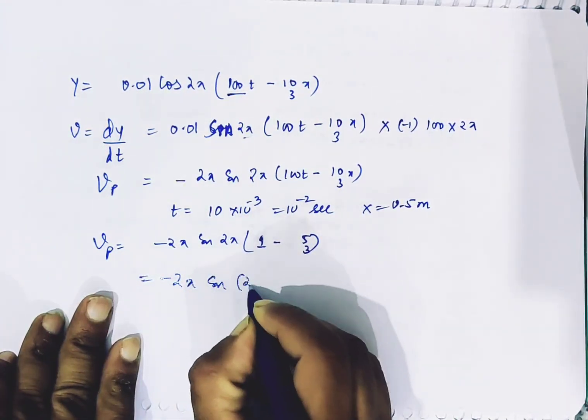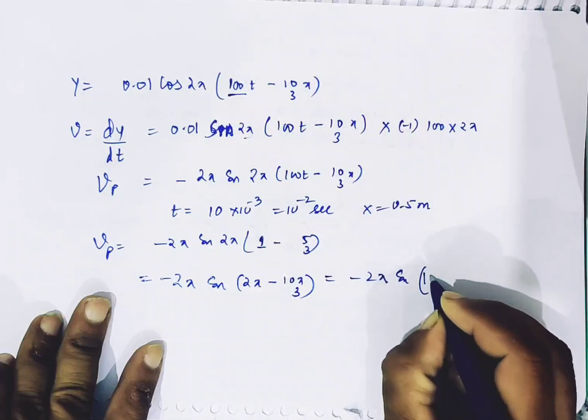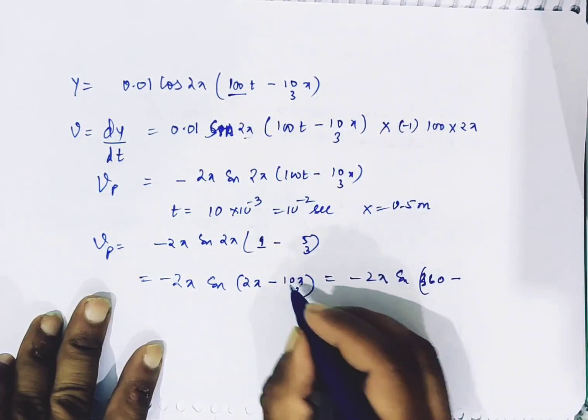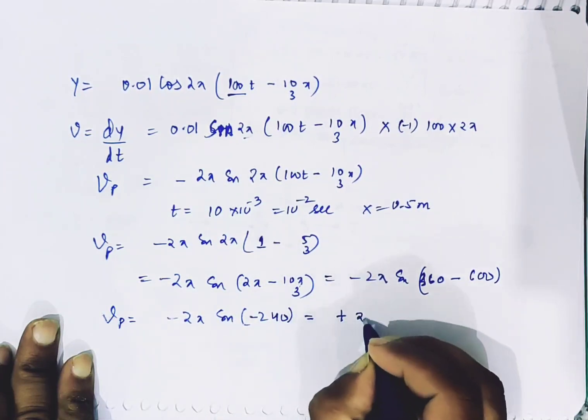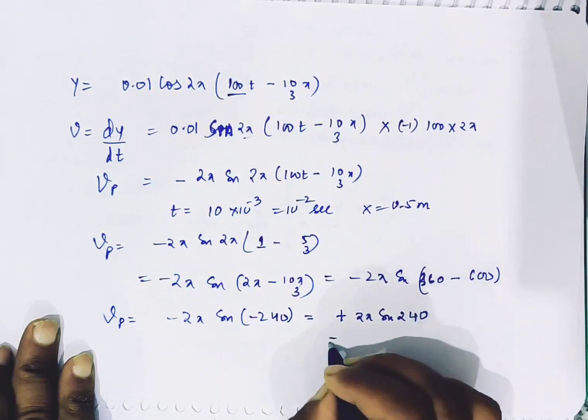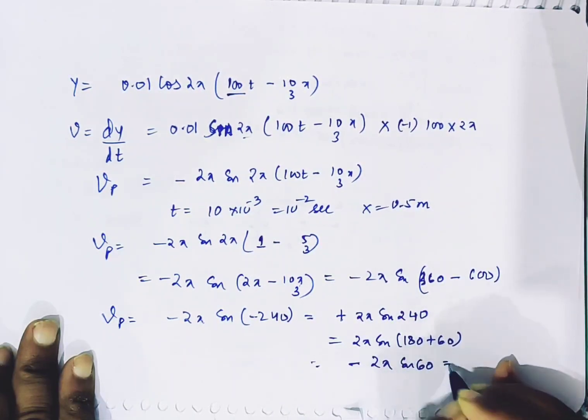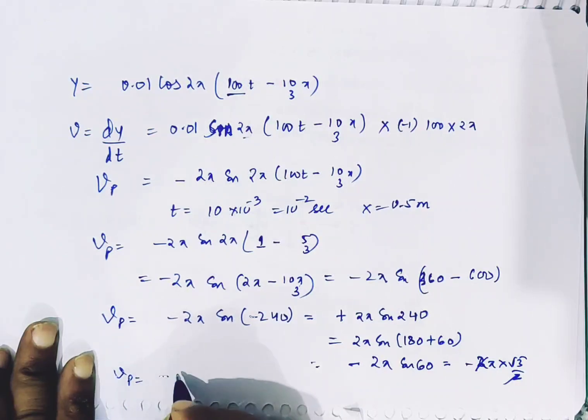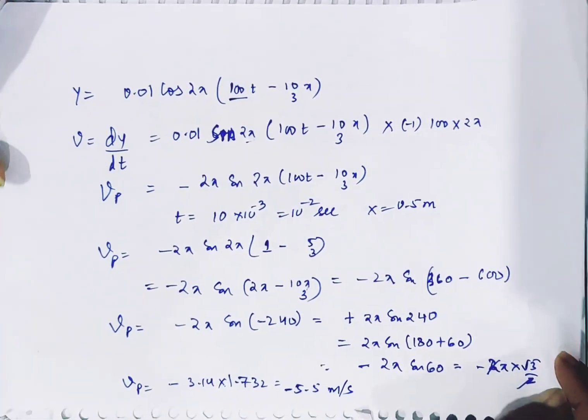Minus 2 pi sin 2 pi minus 10 pi by 3. So we have minus 2 pi sin, writing 2 pi as 360 degrees, so minus 240. Velocity of particle is minus 2 pi sin minus 240, that is plus 2 pi sin 240. This is written as 180 plus 60, which gives minus 2 pi sin 60. So we have 2 pi into root 3 by 2, which cancels to give velocity of particle as minus pi root 3, approximately minus 5.5 meter per second.